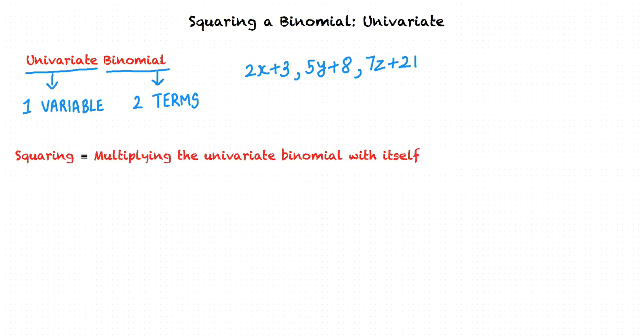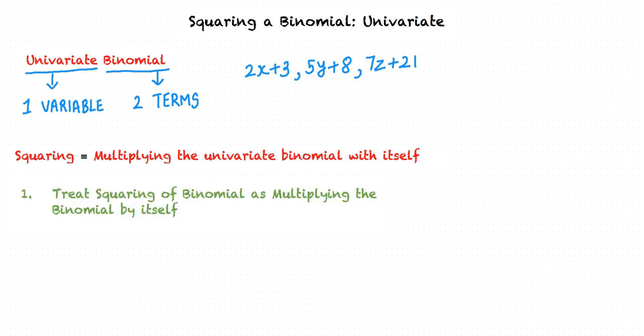Squaring a univariate binomial is equivalent to multiplying the univariate binomial by itself. The steps we will follow to square a univariate binomial are: first, treat the squaring of the binomial as multiplying the binomial by itself.